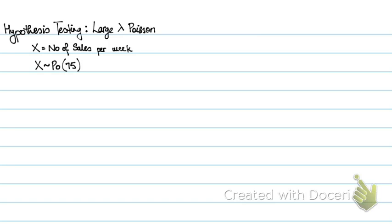X is the number of sales per week, and X follows a Poisson distribution with mean 75. Let's say on a randomly chosen week, there were 89 sales. So the sales were greater than the average, which is 75.